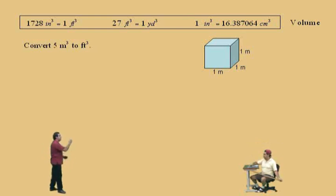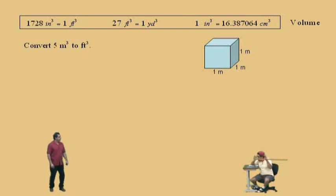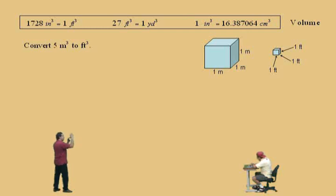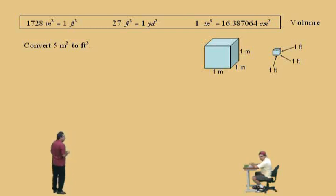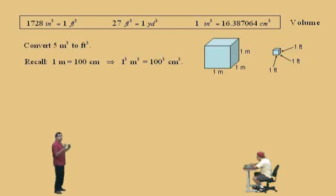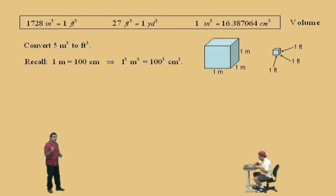We're going to find out how many cubic feet will fit in that cubic meter box. From the metric system, 1 meter is 100 centimeters — remember, centi means a hundredth of. We're going to cube both sides of this equation so that we can deal with volume. If we cube both sides, we get 1 meter cubed is equal to 100 cubed centimeters cubed. We'll work out 100 cubed when we write out our conversion factor.